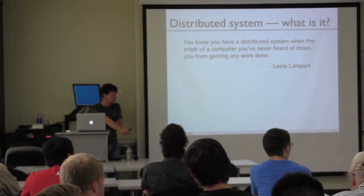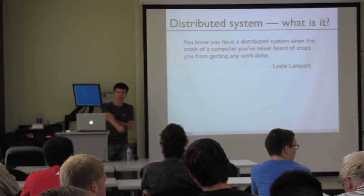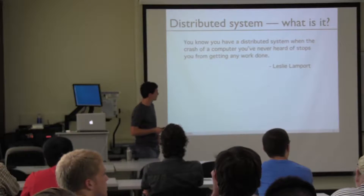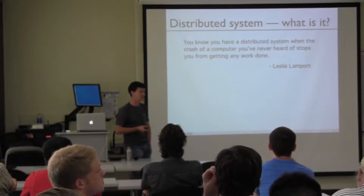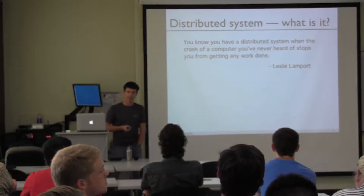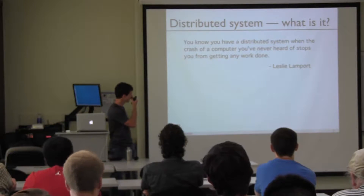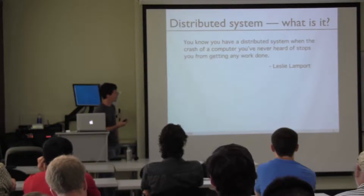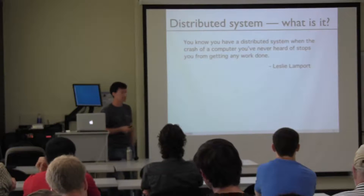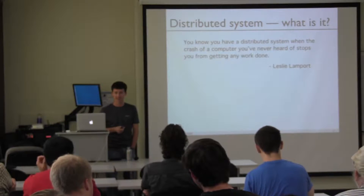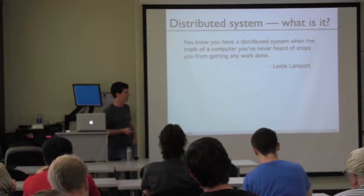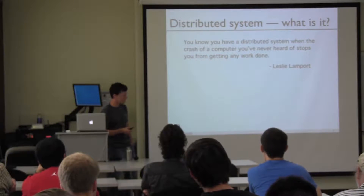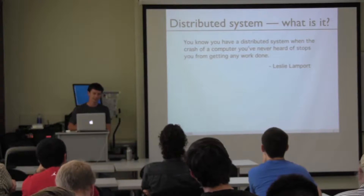Before we get into fixing distributed systems, we have to figure out what a distributed system actually means. Here's a quote attributed to Leslie Lamport — could be someone else. Leslie was the Turing Award winner last year. Essentially, he thinks of a distributed system as a system in which when you have a crash of a computer, it interrupts you from getting any work done — and it's a computer you've never heard of. This is a really nice operational definition of what a distributed system is.